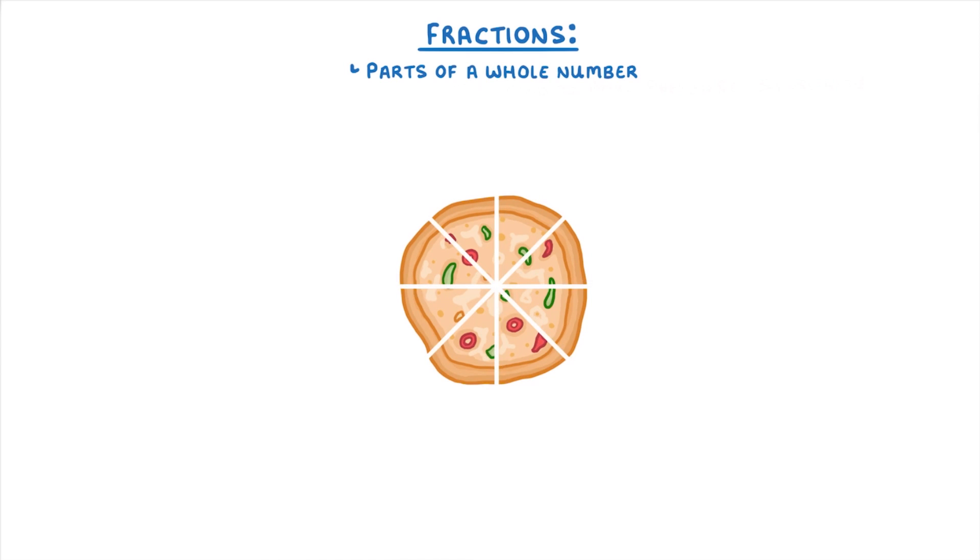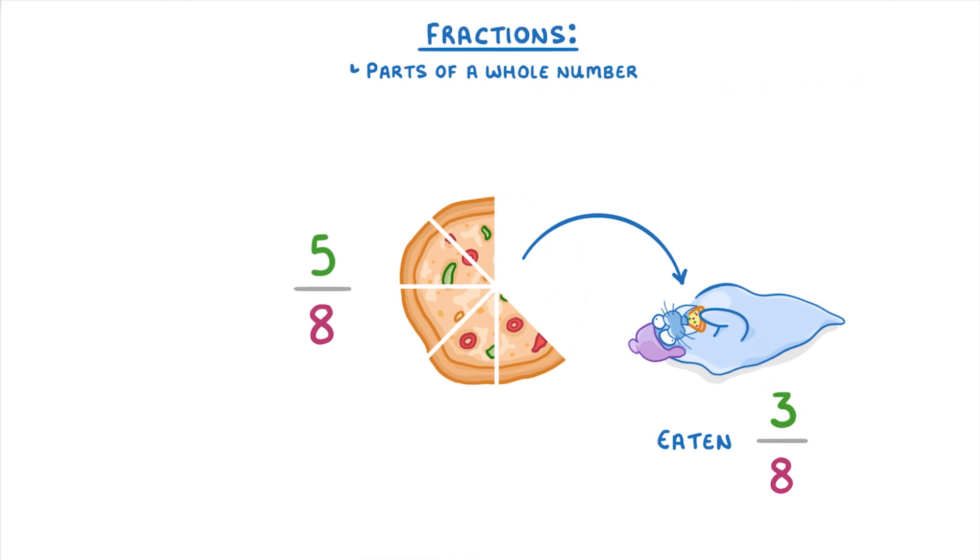To put this into practice, if you had a pizza and you cut it up into 8 equal slices, you'd have divided it by 8. If somebody then ate 3 of those slices, they'd have eaten 3/8 of the pizza.